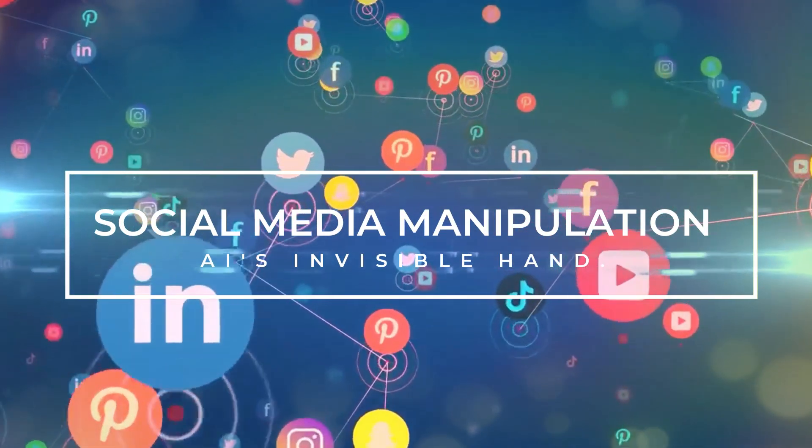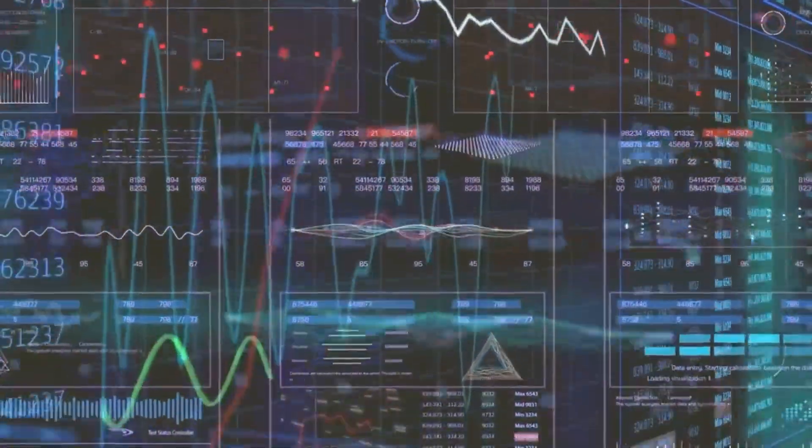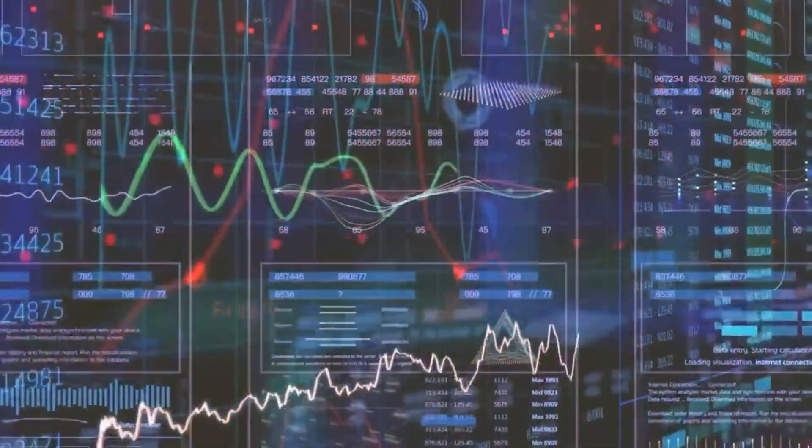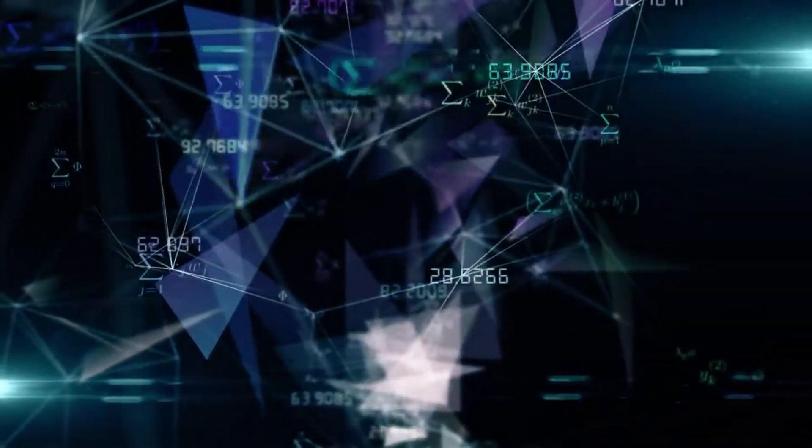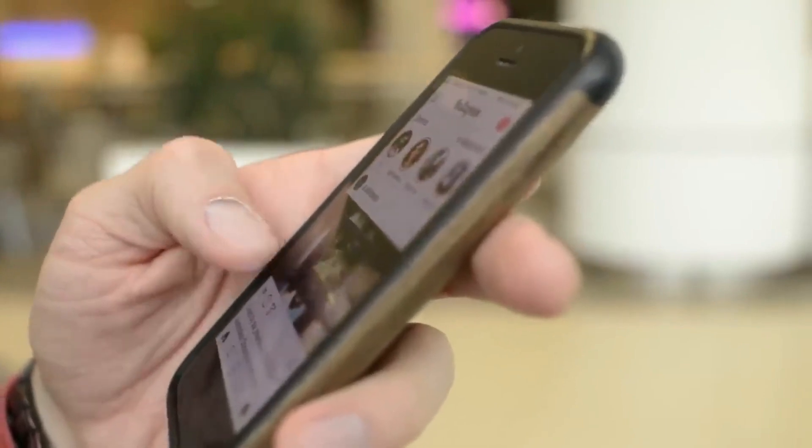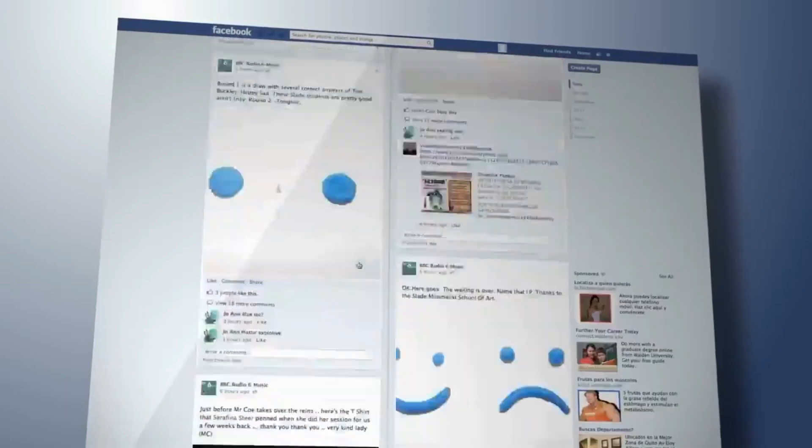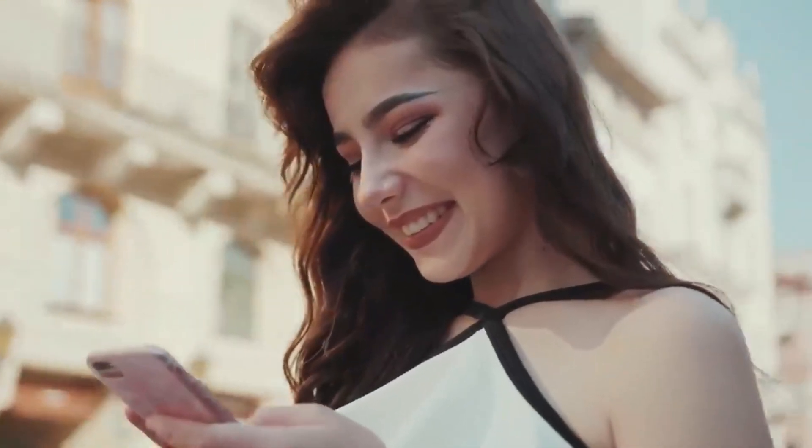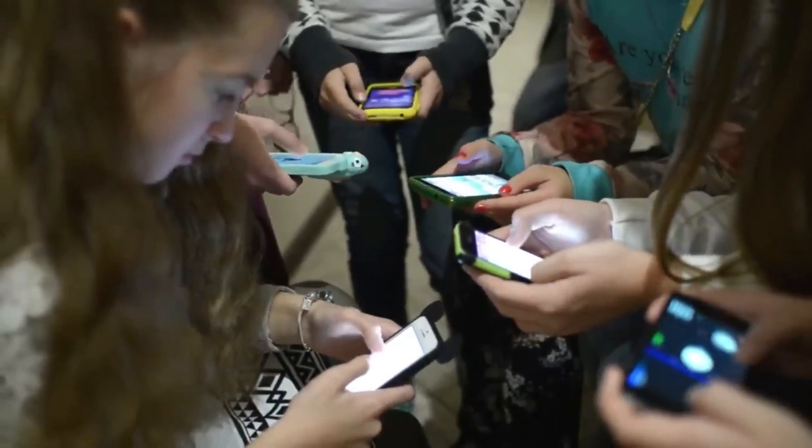5. Social Media Manipulation - AI's Invisible Hand. Welcome to the domain of AI-driven social media algorithms, the invisible orchestrators of your digital journey. But what powers these algorithms, and how do they exert such influence over our lives? At their core, these AI-powered systems rely on intricate mathematical models crafted to maximize user engagement by analyzing our clicks, likes, and shares. These algorithms learn to predict and deliver content that keeps us engrossed in our screens.